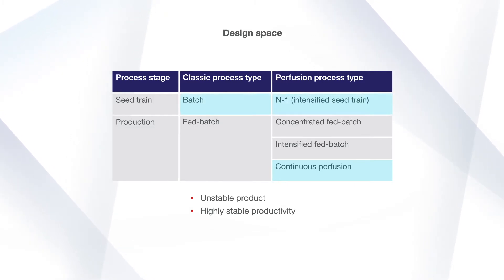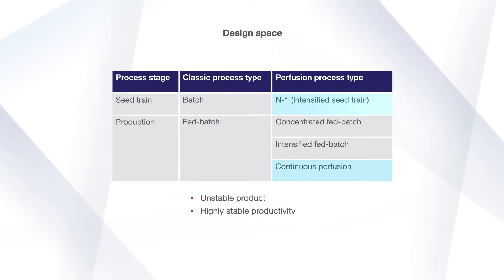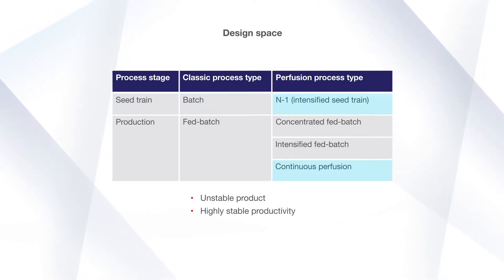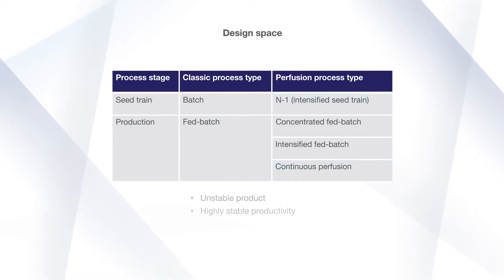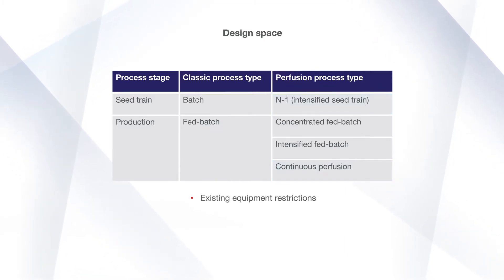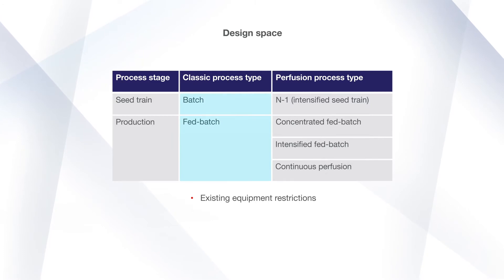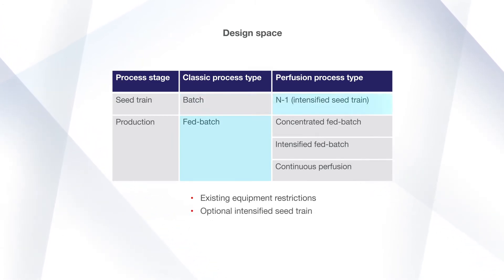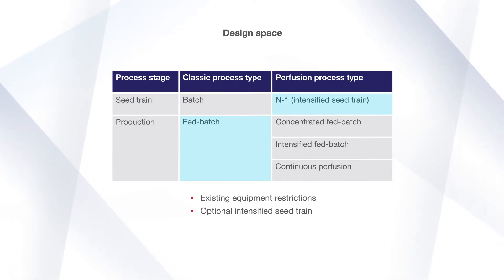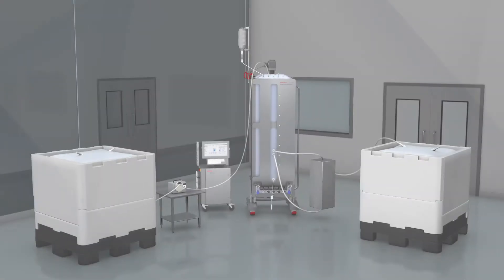Either seed train approach is acceptable. However, an intensified seed train may allow the production reactor to start at a greatly improved seeding density. If there's a need to use existing equipment, such as large production reactors, a classic process type may be the best choice. However, an intensified seed train may still be a good pairing option to improve the overall process.